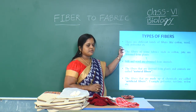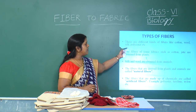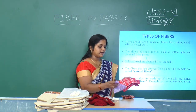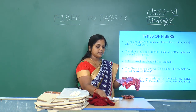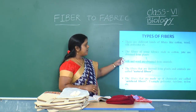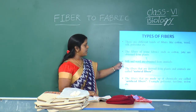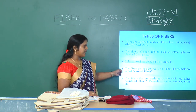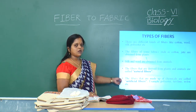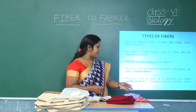Next, types of fibers. There are different kinds of fibers like cotton, wool, silk, polyester, etcetera. The fibers of some fabrics such as cotton and jute are obtained from plants, while silk and wool are obtained from animals. The fibers derived from plants and animals are called natural fibers, and the fibers made up of chemicals are called artificial fibers — examples include polyester, terylene, and nylon.